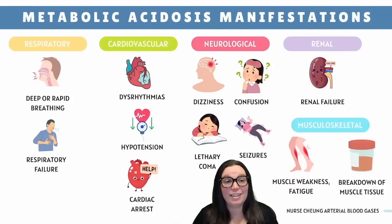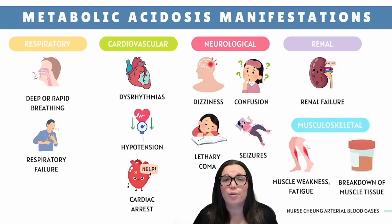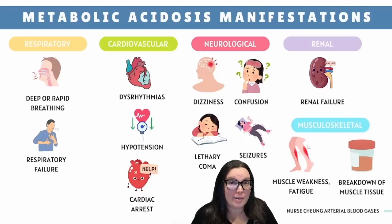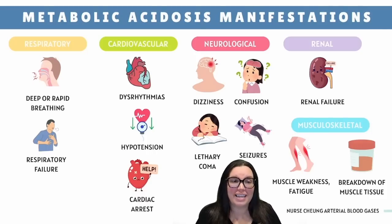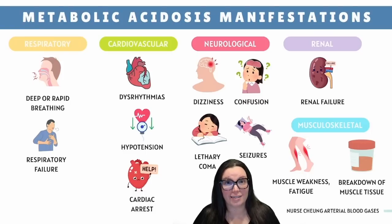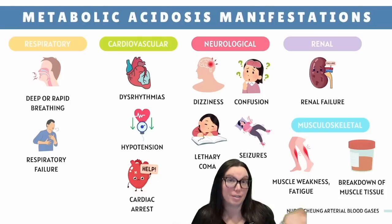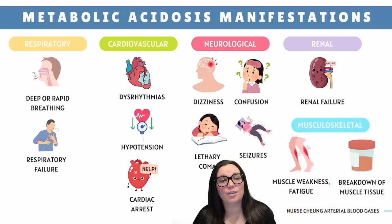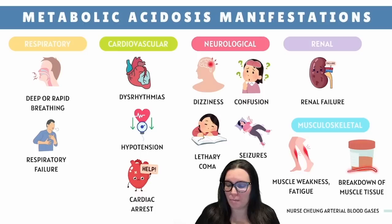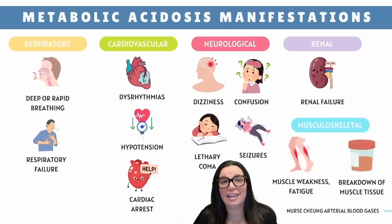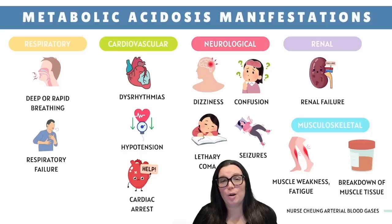What about our renal system? The kidneys are usually the MVP when it comes to pH regulation. But in metabolic acidosis, they're either failing to do their jobs or drowning in hydrogen ions. The kidneys normally excrete hydrogen ions (acid) and reabsorb bicarbonate (base). But if they're damaged or overwhelmed, acid builds up really fast. And then the musculoskeletal system: metabolic acidosis means acid in the bloodstream means muscles take a hit. Muscle weakness and fatigue can occur because cells aren't getting enough oxygen or energy. In severe cases, muscle tissue breakdown can lead to rhabdomyolysis, where muscles literally start to dissolve. With potassium shifts, we may also see cramping, spasms, and even potential paralysis.